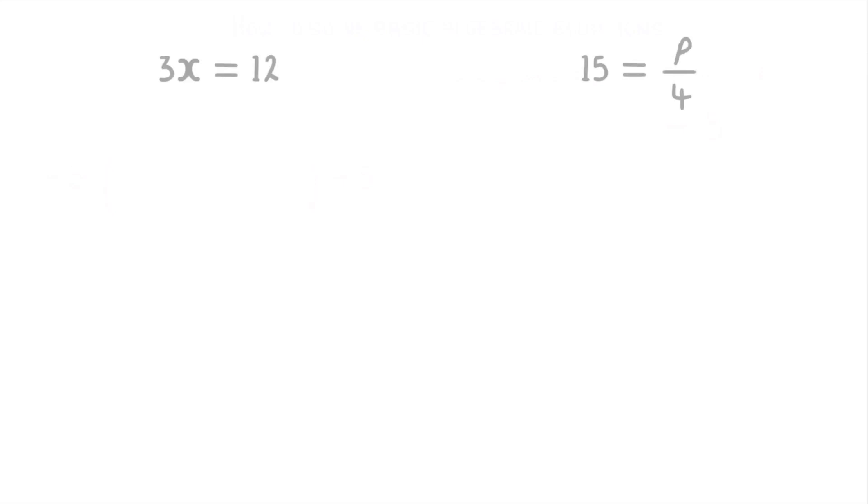Next we need to look at equations that involve multiplication and division. The idea for these is exactly the same: we want to get the unknown letter by itself, and whatever we do to one side we have to do to the other. So in this first one, to get X by itself we need to get rid of this 3. As the X is currently being multiplied by it, to get rid of it we're gonna have to do the opposite and divide by 3. So we need to divide both sides by 3. On the left, 3X divided by 3 gives us 1X, or just X, and then on the right we do 12 divided by 3 to get 4, so X must equal 4.